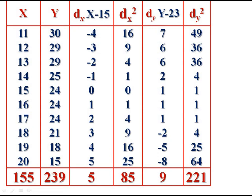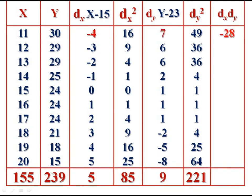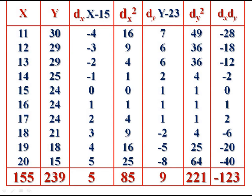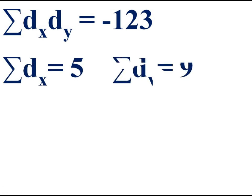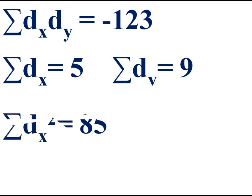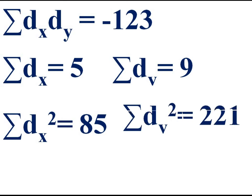Then multiply both deviations: dx into dy. Minus 4 into 7 is minus 28. Minus 3 into 6 is minus 18. Minus 2 into 6 is minus 12. And so on: minus 2, 0, 1, 2, minus 6, minus 20, minus 40. Get its summation. Sigma dx dy equals minus 123. So we now have: sigma dx dy = −123, sigma dx = 5, sigma dy = 9, sigma dx² = 85, sigma dy² = 221, and n = 10.